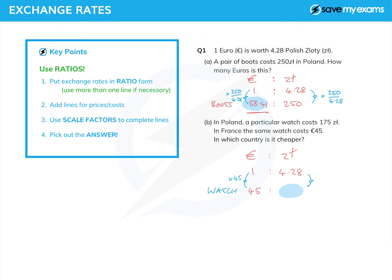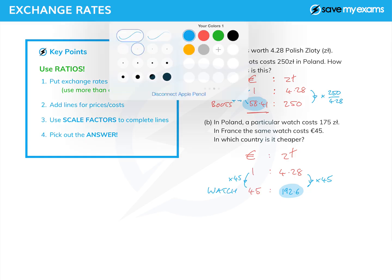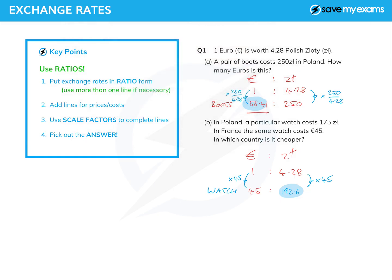If I multiply by 45, the 4.28 — that should be easier. So in France it costs 45 euros, which is the same as 192.6 zloty. Now, is that more or less than the Polish price? Well, since 192.6 is bigger than 175, it is cheaper in Poland.